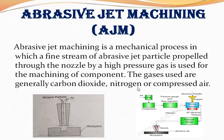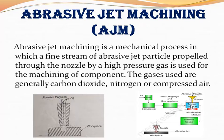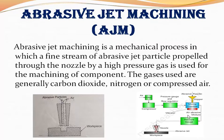In the working of abrasive jet machining, first we take air from a filter, which passes through a compressor where the air is compressed. The compressed air is then sent to a pressure gauge and flow regulator which controls the pressure. Then the compressed air moves into a mixing chamber where it is mixed with abrasive powder, creating an air-abrasive mixture.